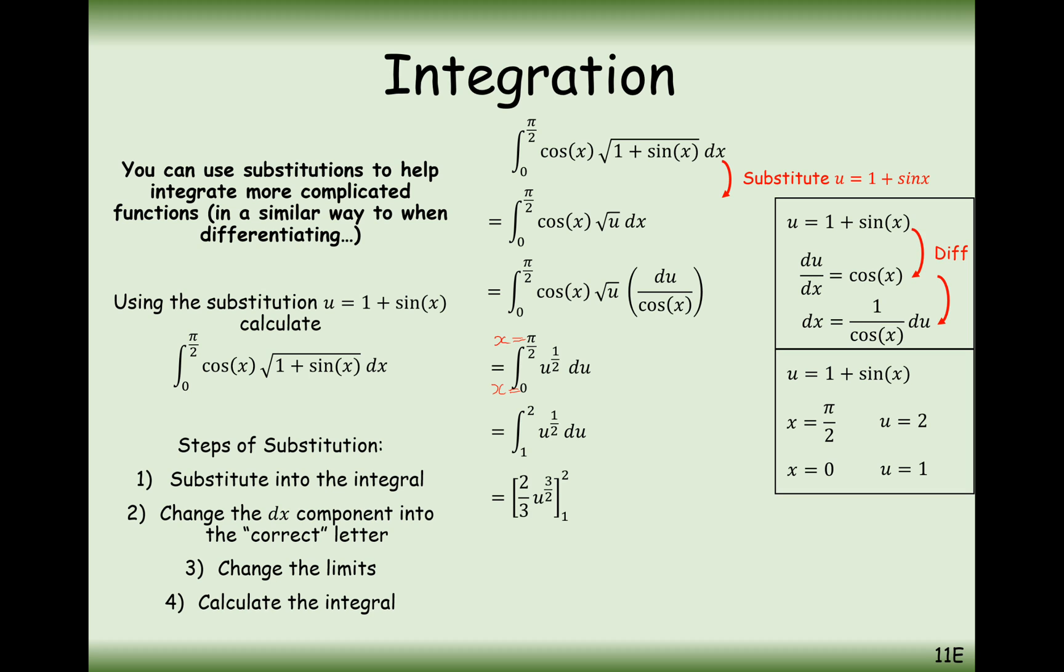In this case here, we are going to increase the power by 1, divide by the new power, and just substitute 2 and 1 in. In this case here, this is our final answer, 2 thirds bracket 2 root 2 minus 1.